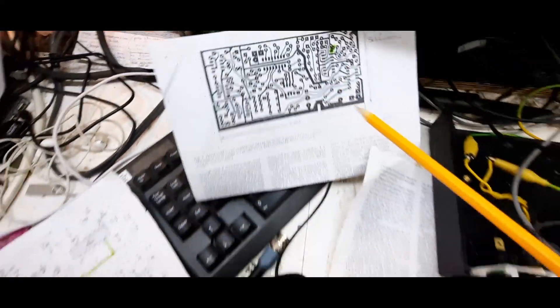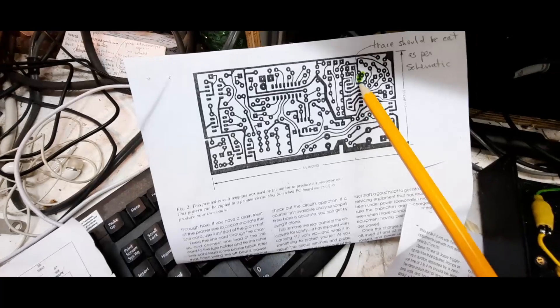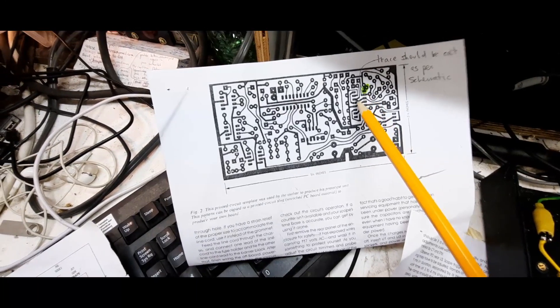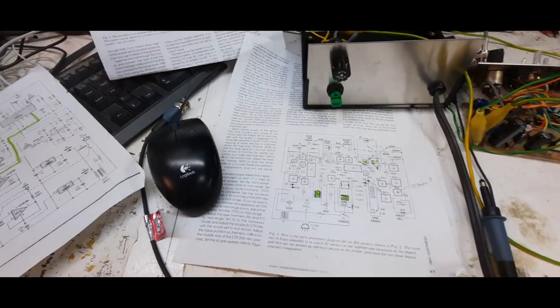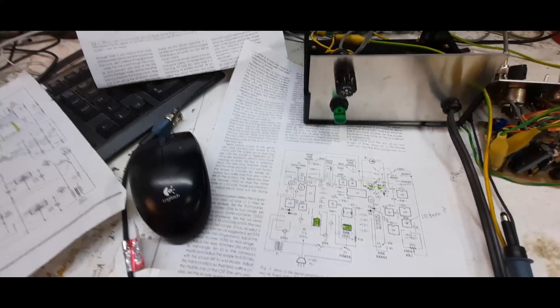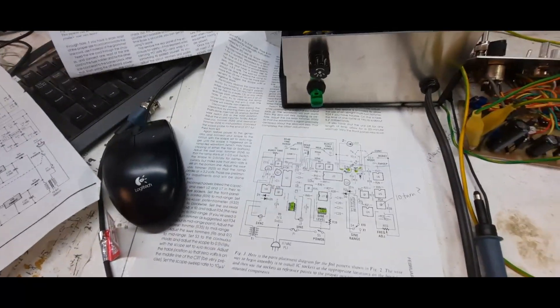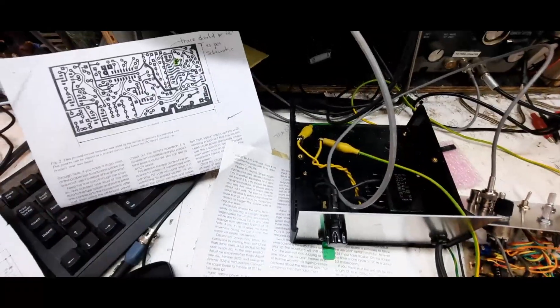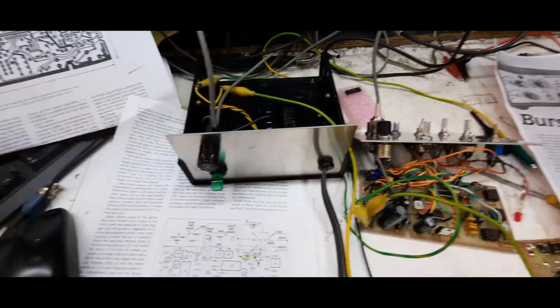Another problem is on the trace itself. Pin one of the 4538 goes to a pad and some components, but it doesn't go like that in the schematic. Pin one should go to pin four, etc. I cut that pad and brought pin one over to pin four and still nothing. I've been at this for over a week now and it's time to give up.